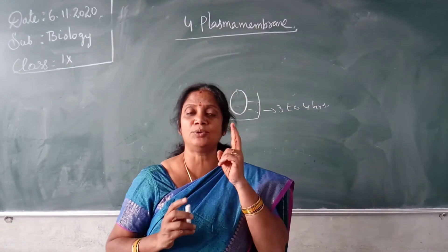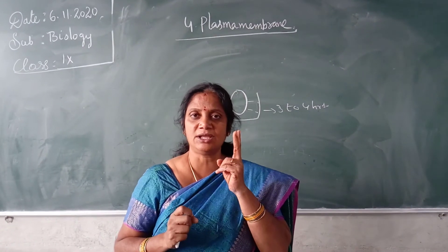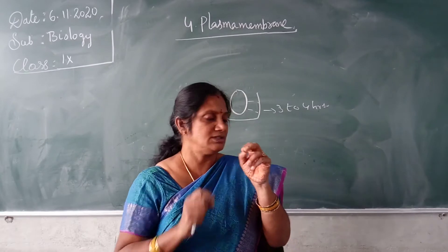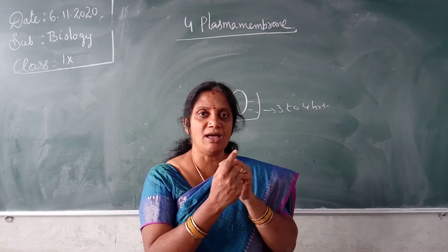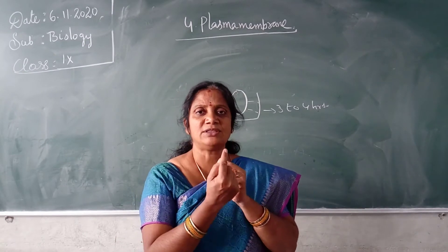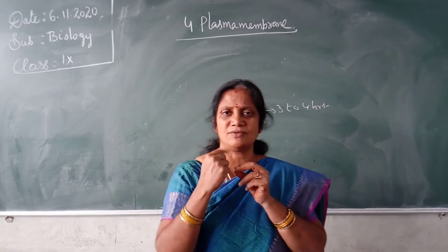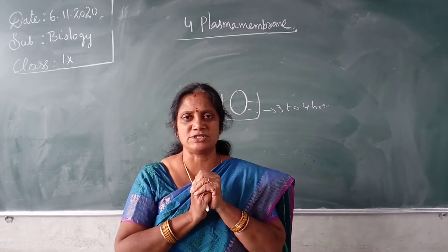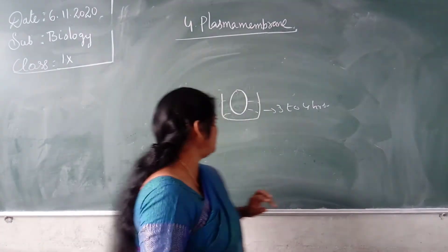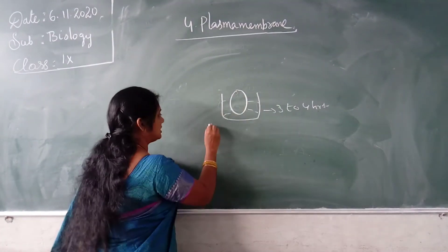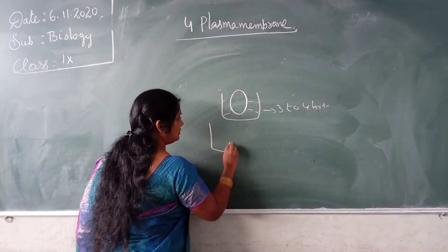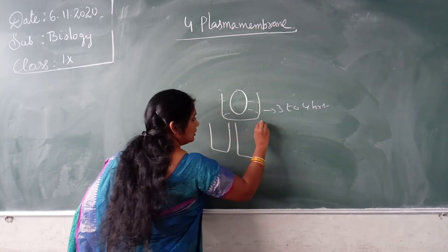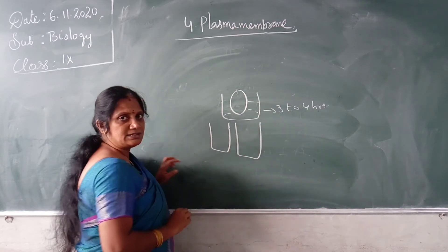You have to take 2 eggs. Measure the width or length of each egg with the help of a paper strip and note that measurement. Then take 2 beakers.